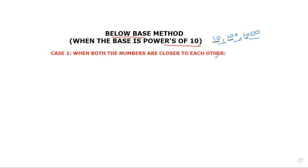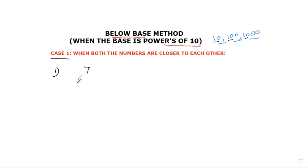We have seen two cases where we can use the base method multiplication. Case one is when both the numbers are close to each other. The next case we will solve is when one number is closer to the base. First we will see some problems when both numbers are closer to each other.